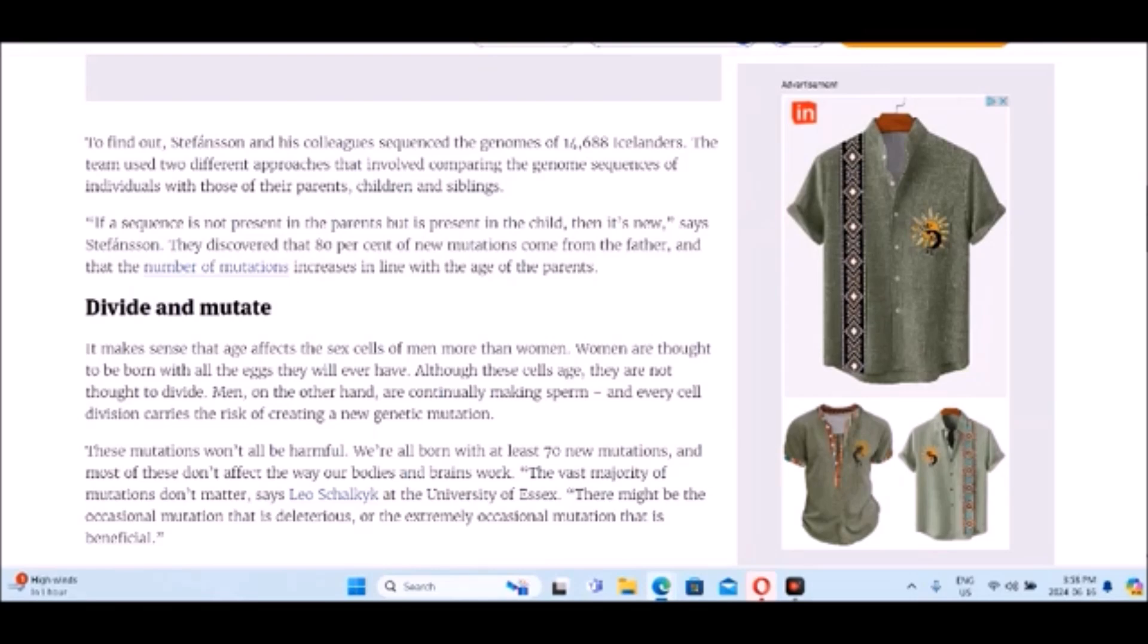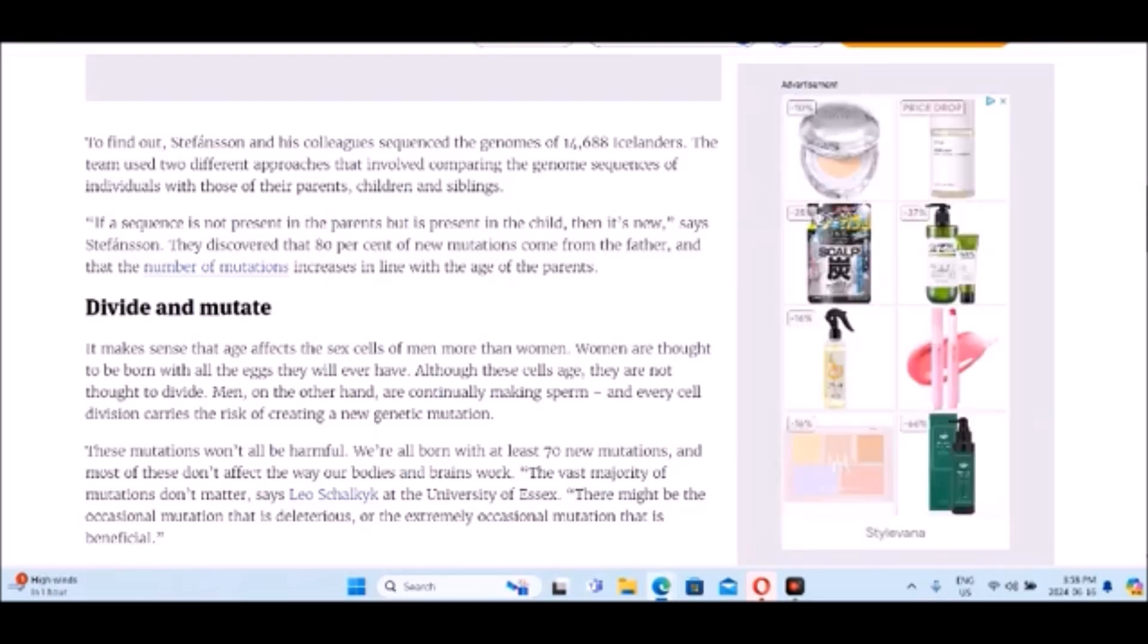It makes sense that age affects the sex cells of men more than women. Women are thought to be born with all the eggs that they'll ever have. Although these cells age, they are not thought to divide. Men, on the other hand, are continually making sperm. And every cell division carries a risk of creating a new genetic mutation.